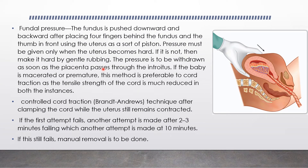Next is fundal pressure. The foot end of the bed is kept low. The fundus is pushed downward and backward after placing the four fingers behind the fundus and the thumb in front, using the uterus as a sort of piston. The fundus is pushed forward and light pressure is applied. When the uterus becomes hard, only light pressure is needed.